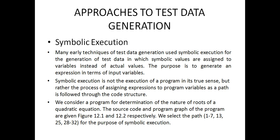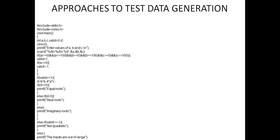Let us consider an example. The program is written here to calculate the root of a quadratic equation, showing the source code and the program graph. The selected path is 1, 7, 13, 25, 28, 32 for the purpose of symbolic execution. Three variables are written: A, B, C, and D. Then we assign values for A, B, C. After taking input values within the array range 0 to 200, and based on flag value conditions, the conditions will be checked. The flag values are 1, 0, and minus 1.